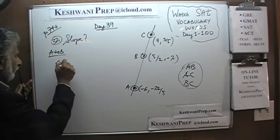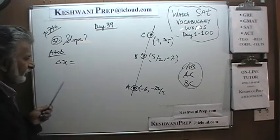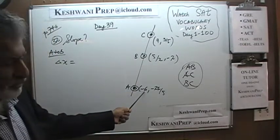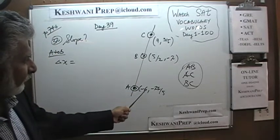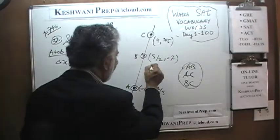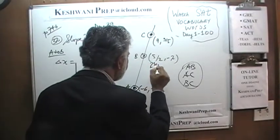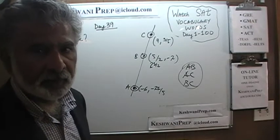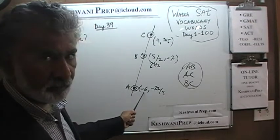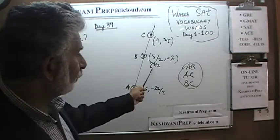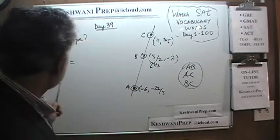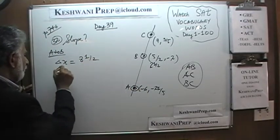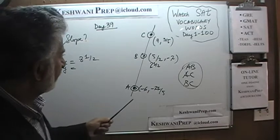We need the change in X. Let's see how much X is changing. We are going simply from A to B. We start our journey at negative 6, and 5 halves is 2 and a half. Imagine in your mind a number line: if we travel all the way from negative 6 to 2 and a half, that's a journey of 8 and a half. Change in Y: